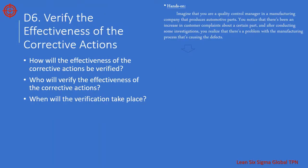The sixth step is to verify the effectiveness of the corrective actions. This means testing the new process or equipment to make sure that it's working properly and that the problem has been resolved. In our example, after implementing the new cooling system, the team conducts tests to verify its effectiveness and finds that the new system is working properly and that the problem has been resolved.